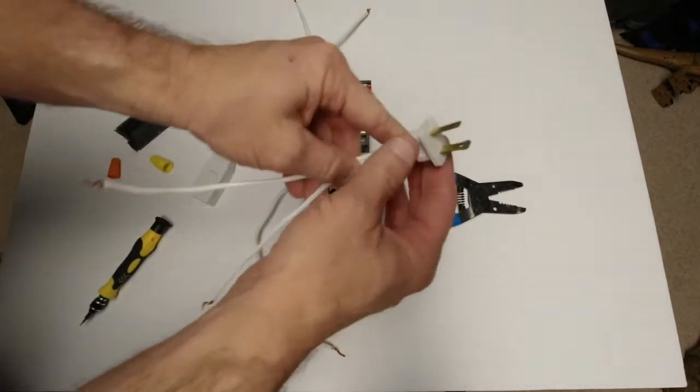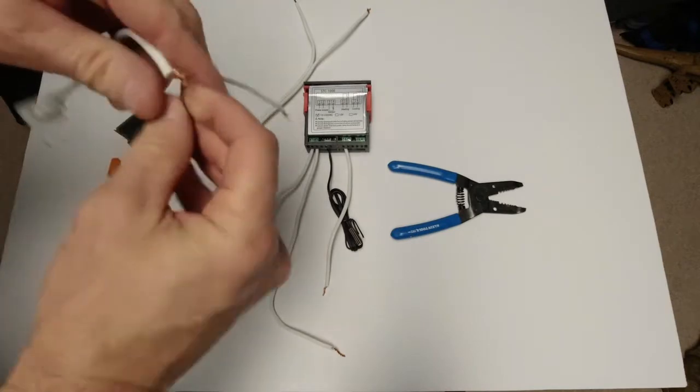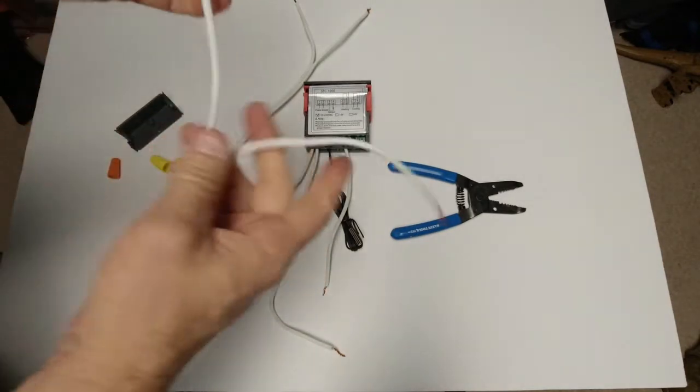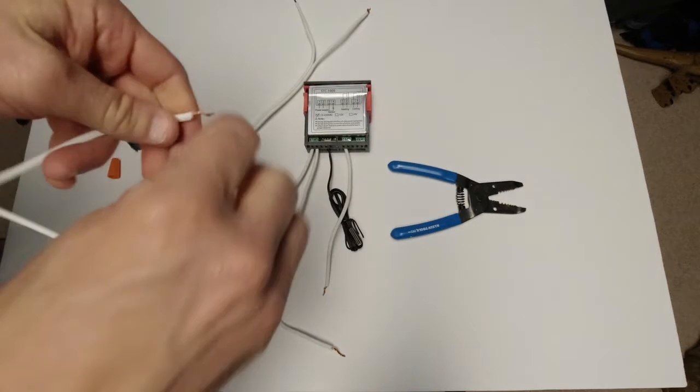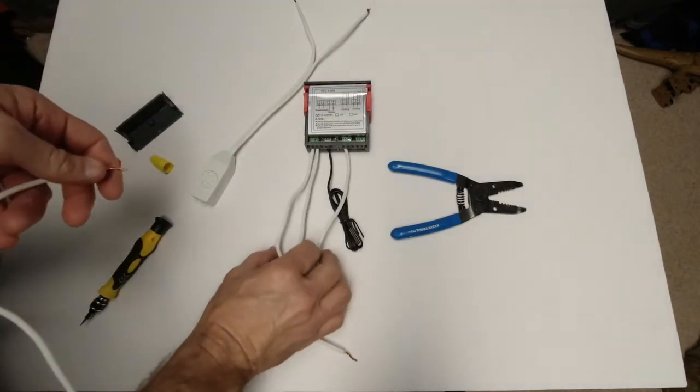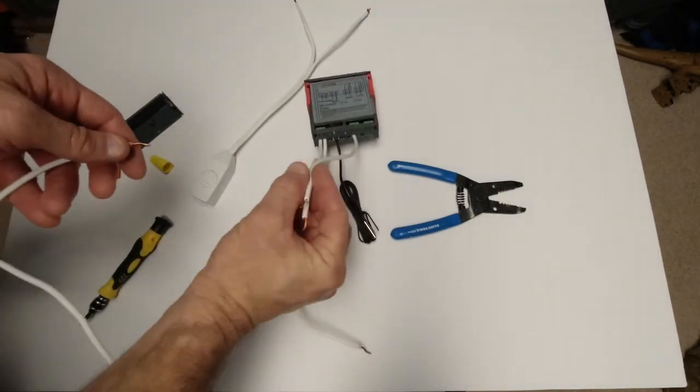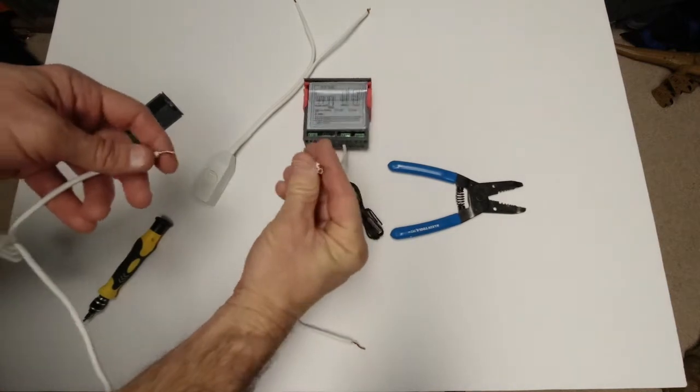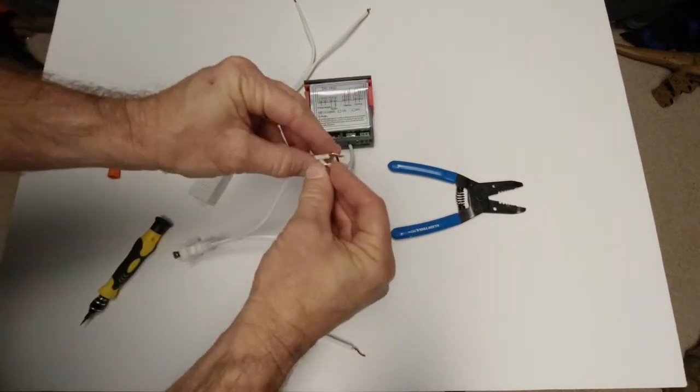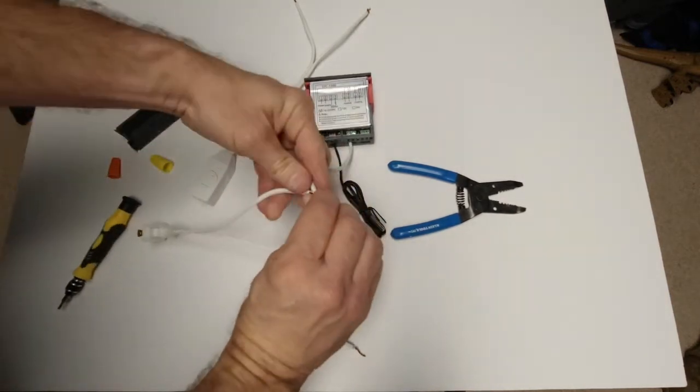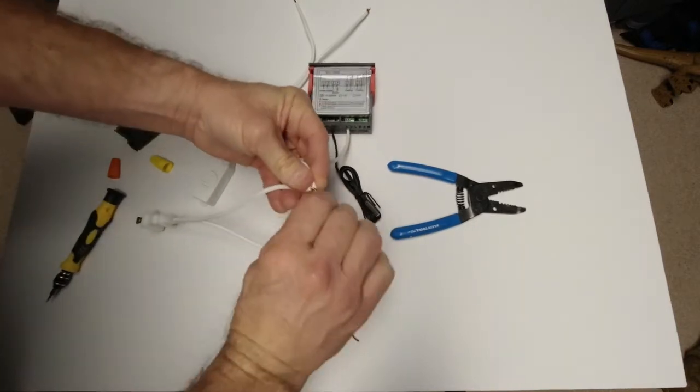I'm gonna take my power end. This is not a polarized thing or grounded. I'm gonna take the two short ones and one of the ones from my power cord, I'm gonna twist them together.